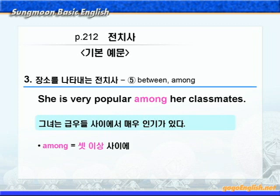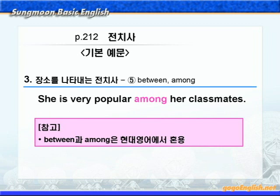여기서 보듯이 among은 between처럼 우리말로 '뭐뭐 사이에'라는 뜻이지만, 엄격하게 따져보면 '셋 이상 사이에'라는 뜻입니다. 하지만 현대 영어에서는 among과 between을 혼용해서 씁니다. 다음으로 장소를 나타내는 전치사 to와 for에 대해서 살펴보겠습니다. 기본 예문 동그라미 6번입니다.